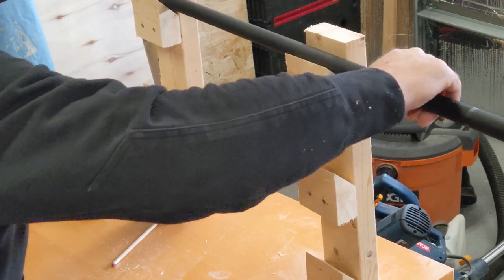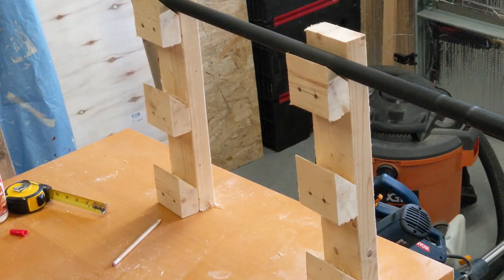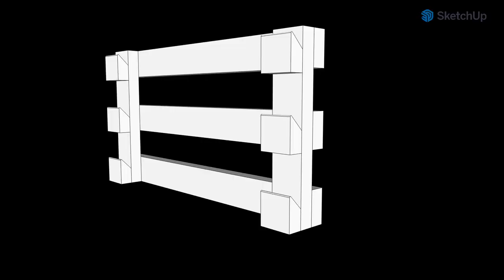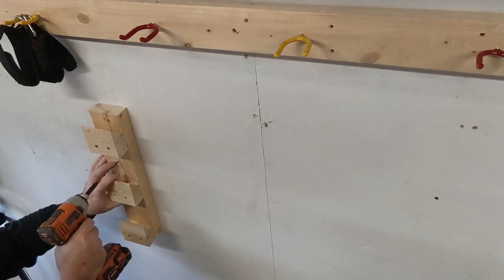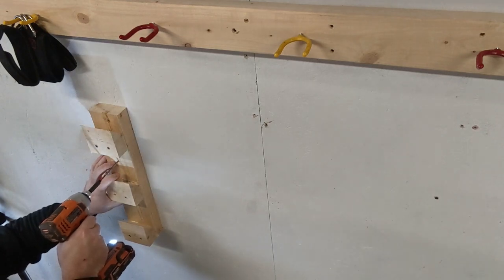For mounting, you may want to put 2 or 3 stringers across the back and secure those to the wall to accommodate different stud distances, as well as giving you flexibility and placement. For my purposes, I'm screwing vertical pieces directly into the studs.